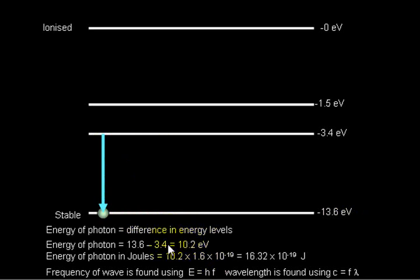So here we can see the energy of the photon will be 10.2 electron volts. To convert it into joules, we have to multiply by the charge of an electron, which is 1.6 times 10 to the minus 19. So therefore, in joules, the amount of energy is 16.32.